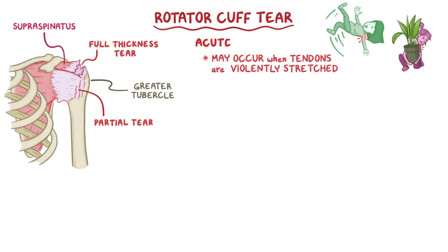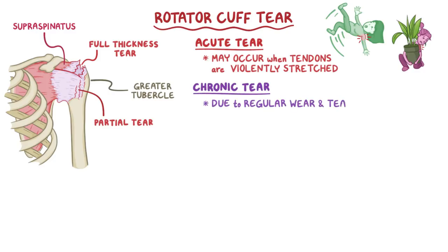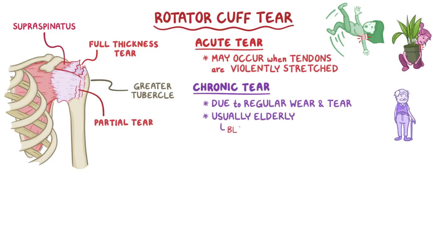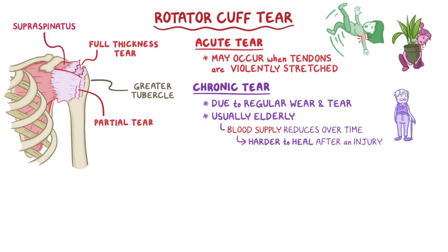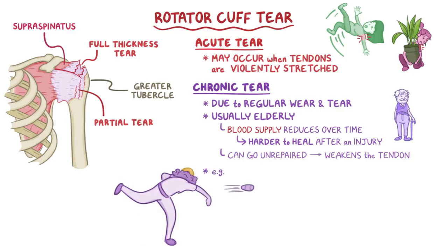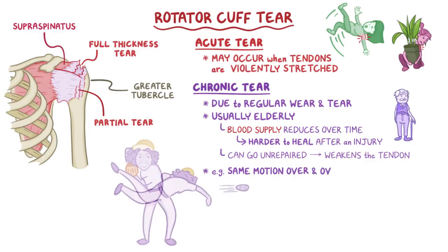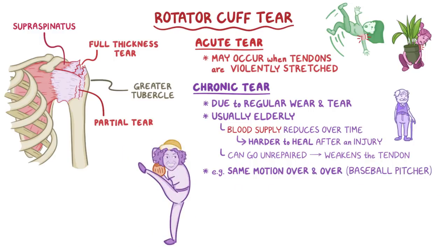In contrast to an acute tear, there may also be a chronic tear due to regular wear and tear, which usually occurs in the elderly. That's because the blood supply to the rotator cuff tendons reduces over time, making it harder for them to heal after an injury. As a result, injuries can go unrepaired, and successive injuries can weaken the tendon. A classic example is when the shoulder is used to repeat the same motion over and over, like for a pitcher in baseball.